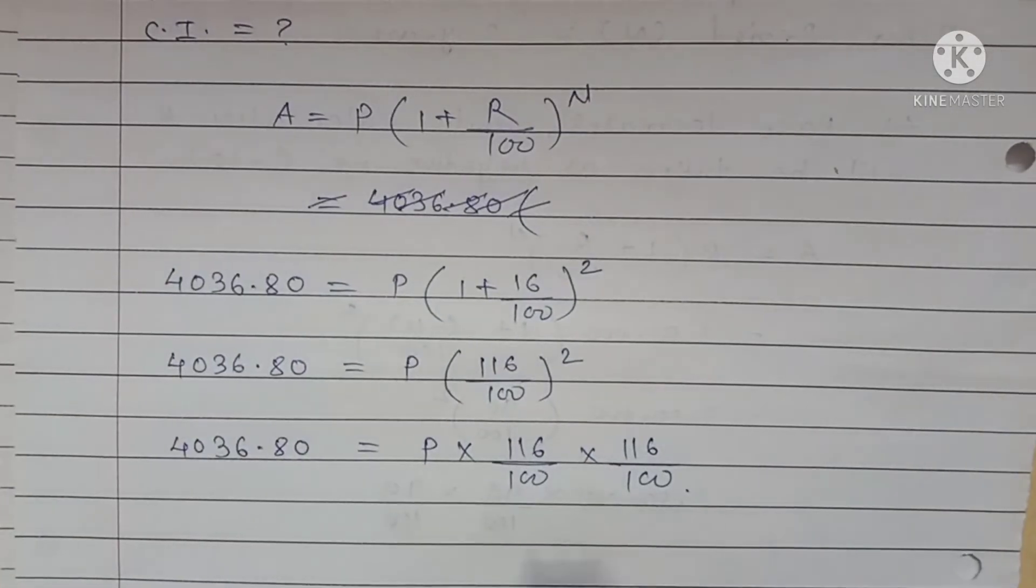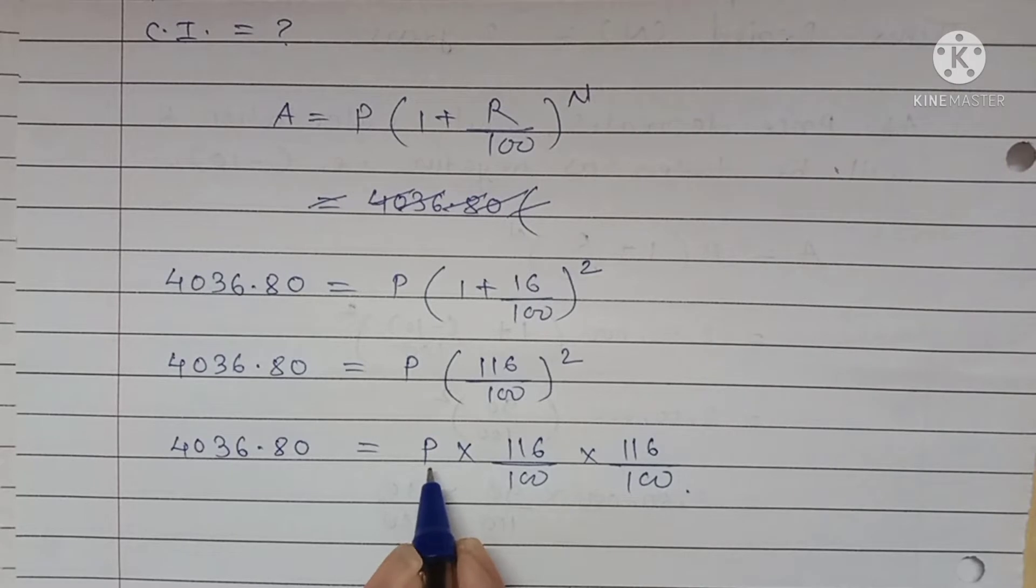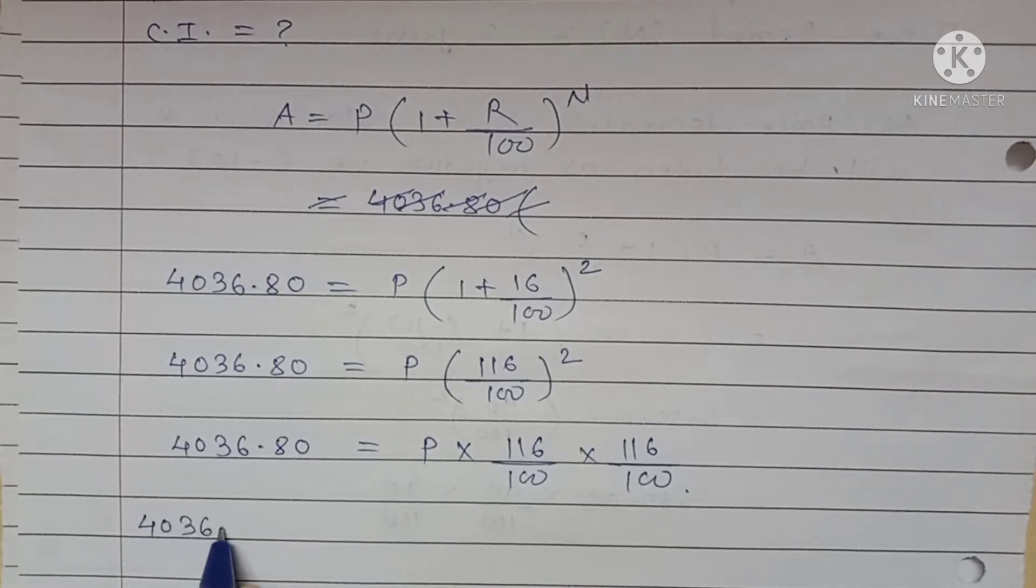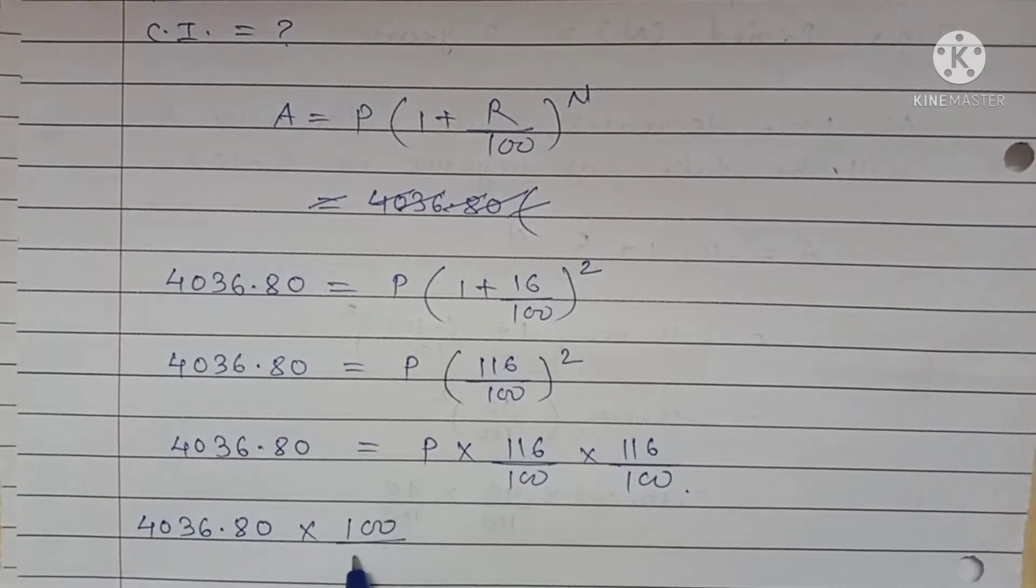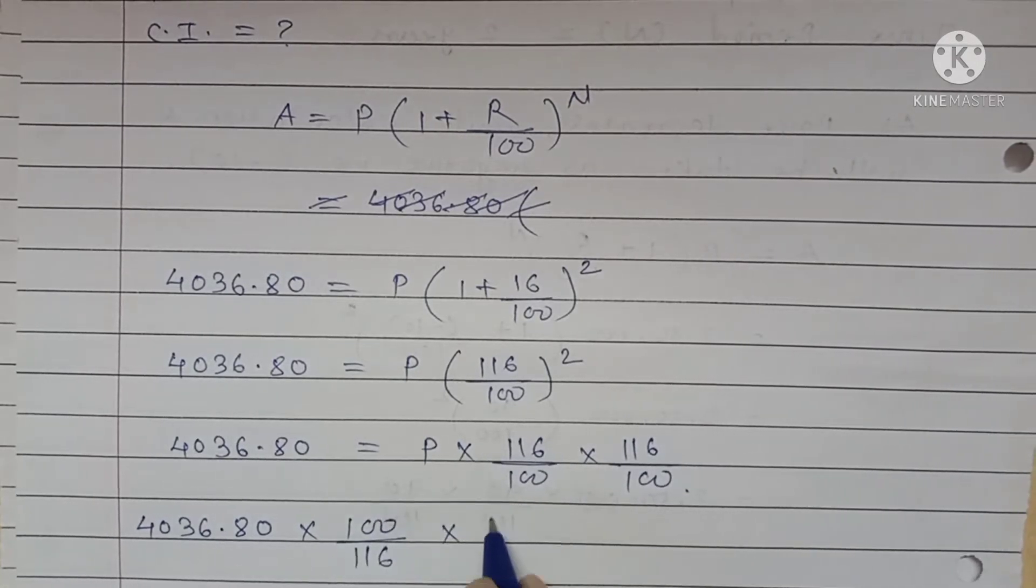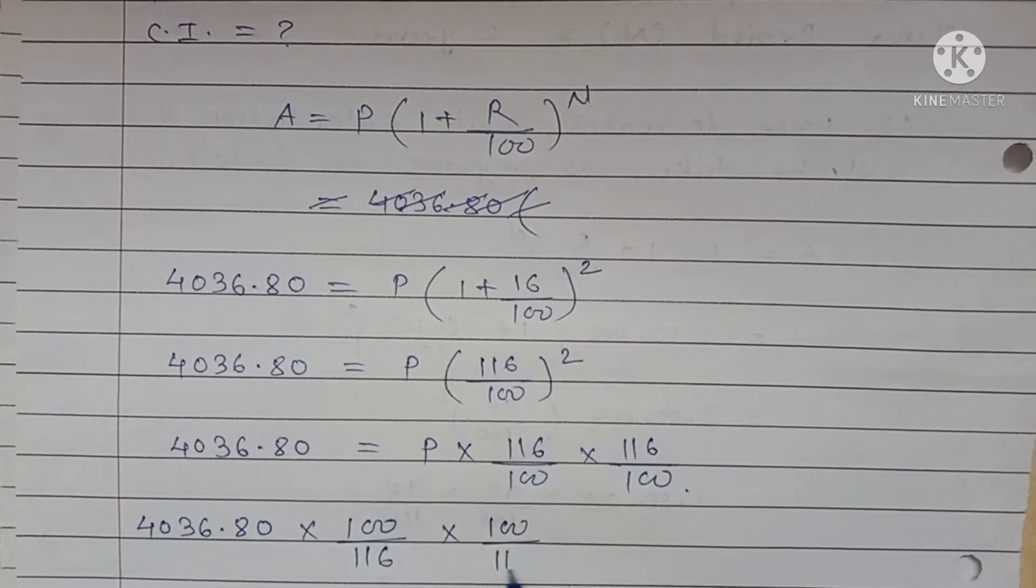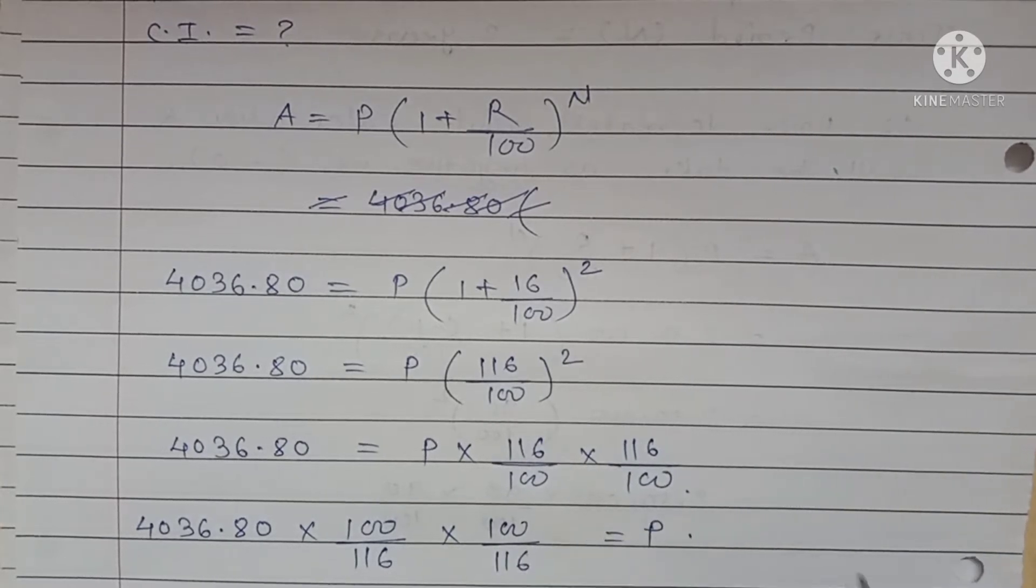4036.80 is equal to P into bracket. 100 plus R is given. Here, you can write down P as it is here. 4036.80 is equal to P.